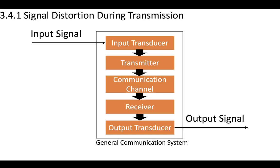Now let's consider how a signal might be distorted during transmission. Let's think about this in terms of a general communication system that may have these components within it: a black box of transducers, transmitters, the communication channel, the receiver, and so on.